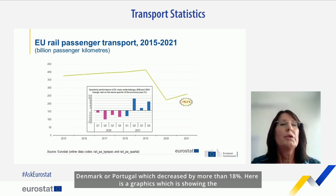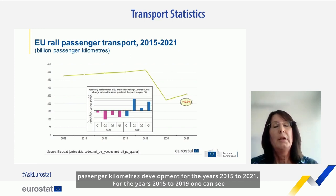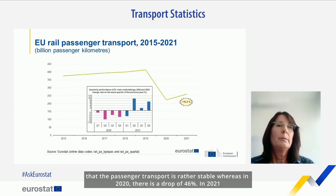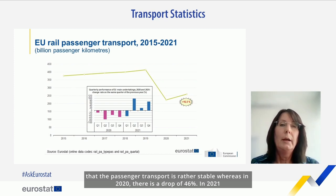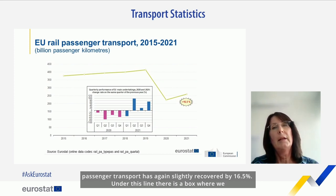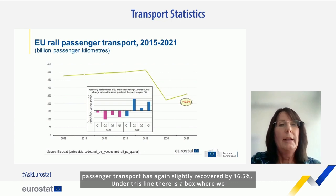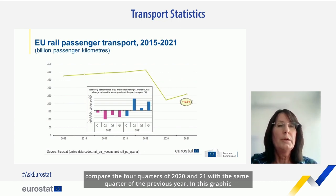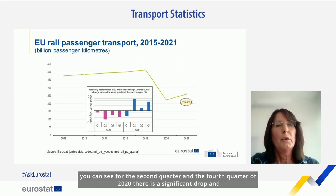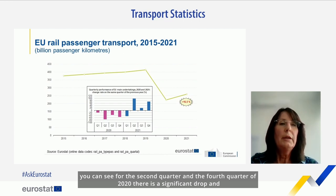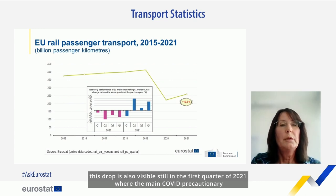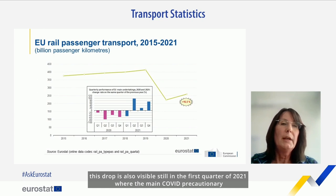Here is a graphic showing the passenger kilometres development for the years 2015 to 2021. For 2015 to 2019 passenger transport was rather stable, whereas in 2020 there is a drop of 46%. In 2021, passenger transport again slightly recovered by 16.5%. Comparing the four quarters of 2020 and 2021 with the same quarter of the previous year, we can see for Q2 and Q4 of 2020 a significant drop, which was also visible in Q1 of 2021 when the main COVID precautionary measures were still in place.